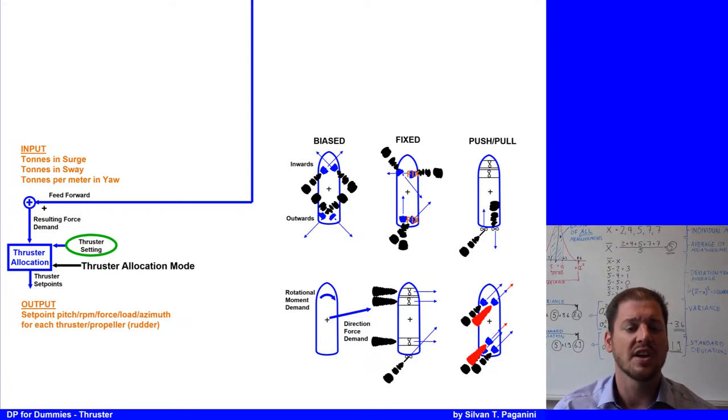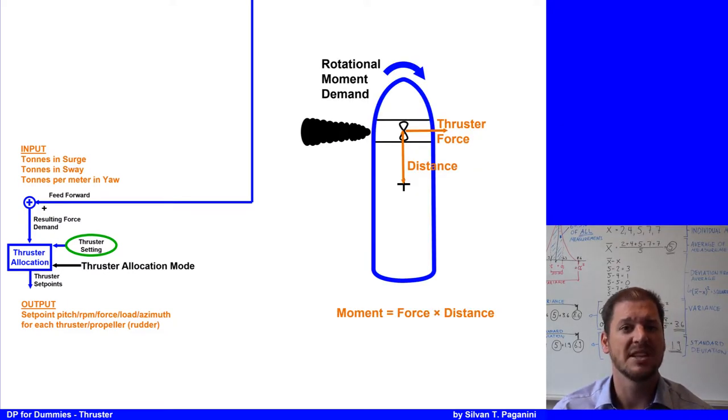To compensate for surge and sway in tons, it's easy. For the heading, the so-called yaw axis, looks a bit different because it's a moment. The rotational point is a distance away from the thruster, multiplied with the thruster force acting 90 degrees on the angle, on the moment in tons per meter.